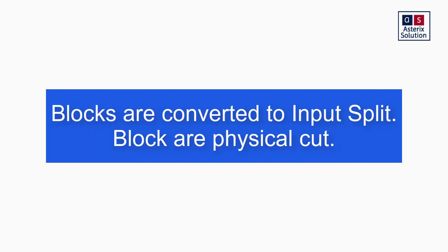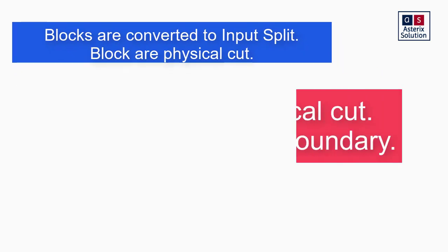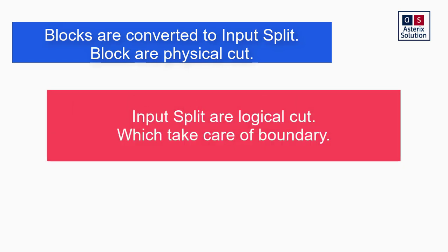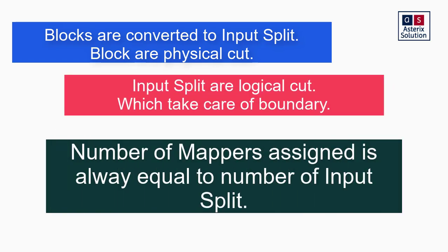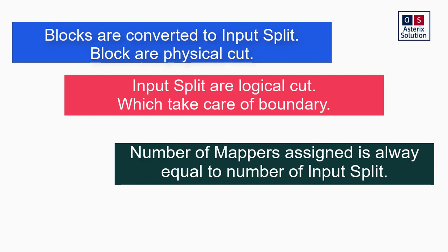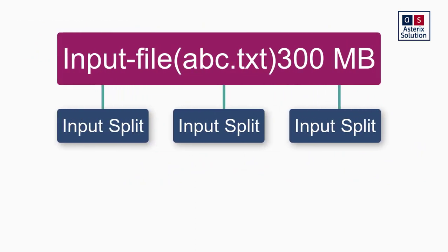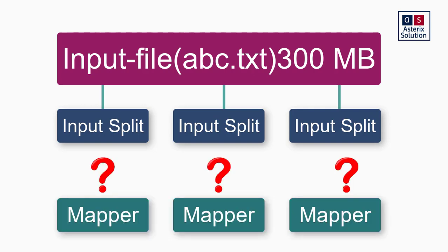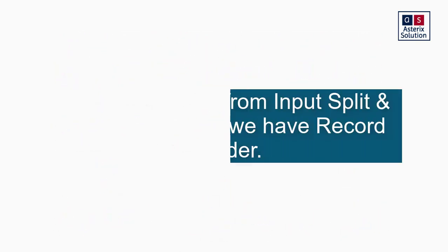Every file in HDFS, when you start working on a MapReduce code, will first be broken into an input split. An input split is basically a logical breaking of a file — how a file is logically broken boundary-wise. As many input splits as you have, that many mappers will be running. In my diagram, from one input file I get three input splits, and for those three input splits I have three mappers running.